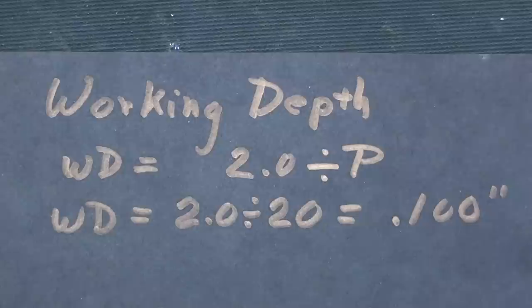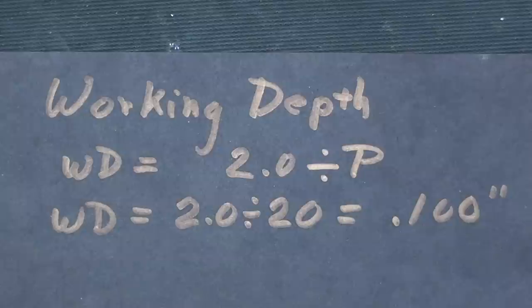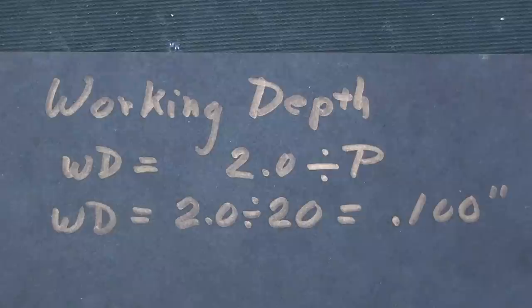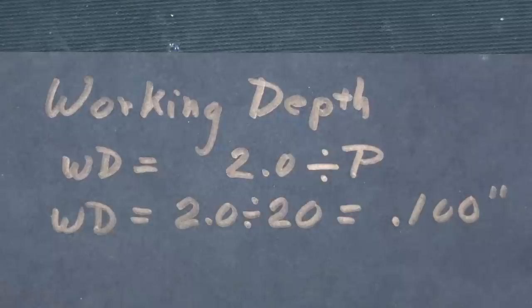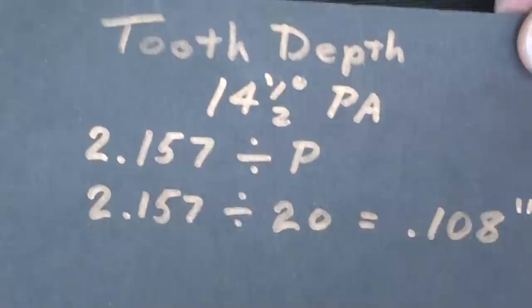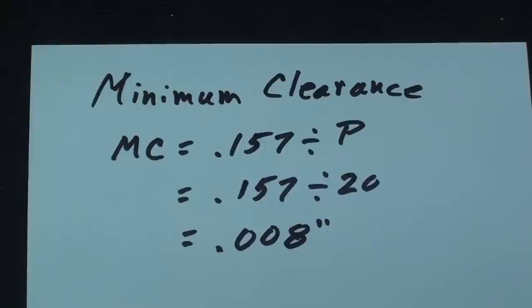This is new. These formulas came out of the little black book, but the working depth is 2, that's a constant, divided by the pitch, and the pitch is 20, so doing the math you can see that the working depth is 100 thousandths, and remember that the tooth depth was 108 thousandths.